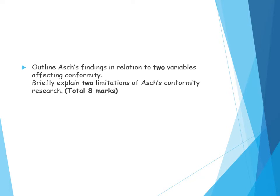'Outline Asch's findings in relation to two variables affecting conformity' — so group size, unanimity, or task difficulty — 'and briefly explain two limitations of Asch's conformity research' for eight marks. Remember, eight marks at A-level is three marks AO1 and five marks AO3, so a third should be AO1 and two-thirds should be evaluation. Let's look at evaluation in a bit more detail.